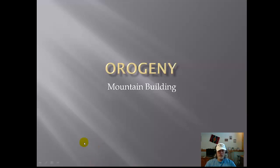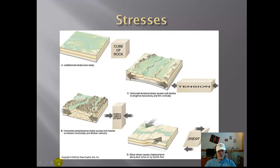Today we're going to take a look at mountain building, or the fancy term is orogeny. For mountain building, we're going to talk about some faults and we're going to talk about folding. What you really need to talk about is the stress that's put on a body of rock — or as in this slide here, they call it a cube of rock, a section of land. There are really three different stresses you can put on rock.